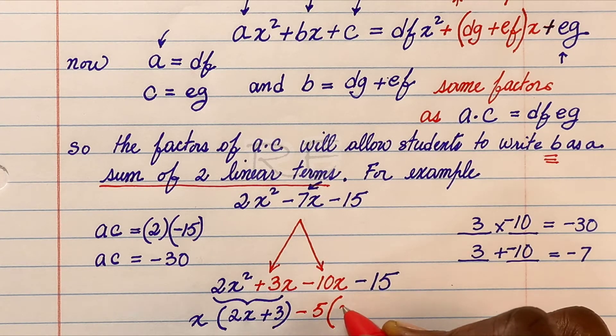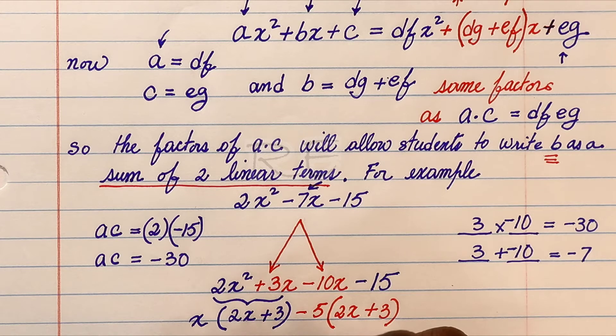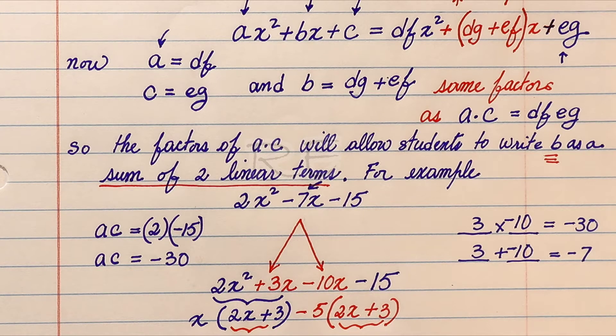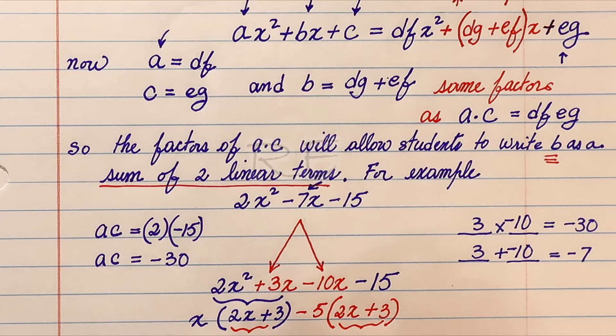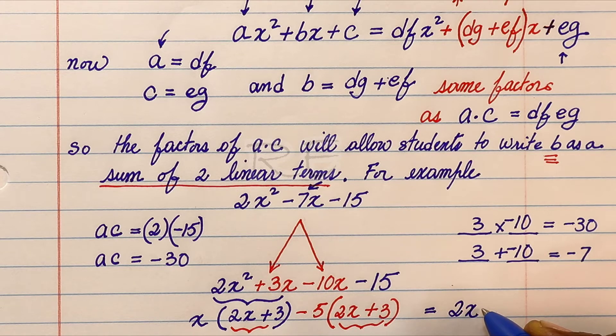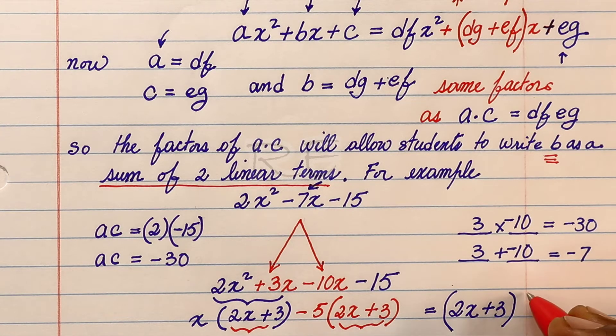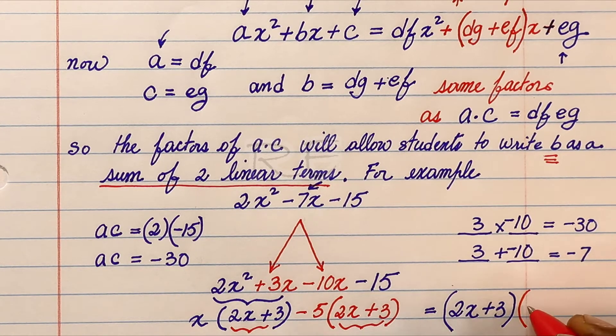The greatest common factor between negative 10x and negative 15 is negative 5, giving us minus 5 times 2x plus 3. Now, the greatest common binomial is 2x plus 3. Therefore, the final answer will be 2x plus 3 times x minus 5, and we're done.